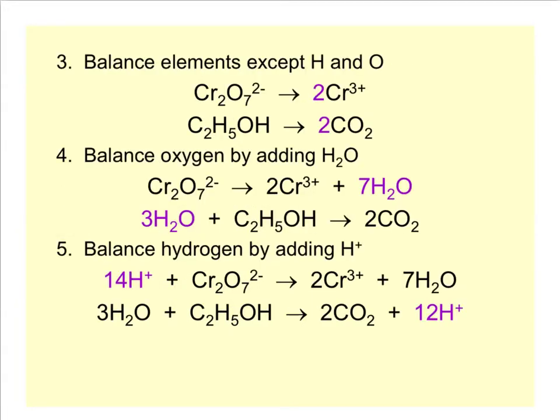Step three. What we're going to now do is balance the elements that are not hydrogen and oxygen. In the reduction half-reaction, that would be chromium, so we put a 2 there to balance the chromiums. I have two carbons here, one carbon there, so I put a 2 in front of carbon dioxide to balance those. Now everything but O and H is taken care of in this example.